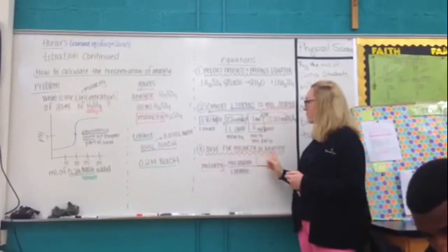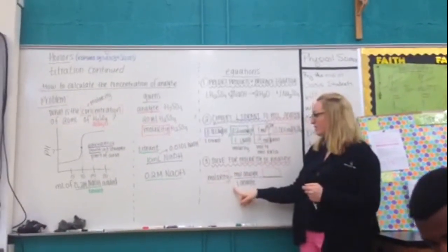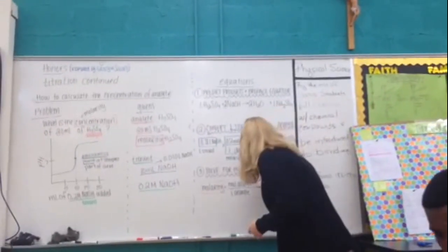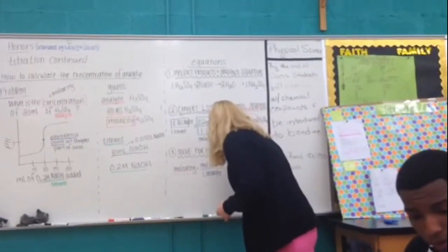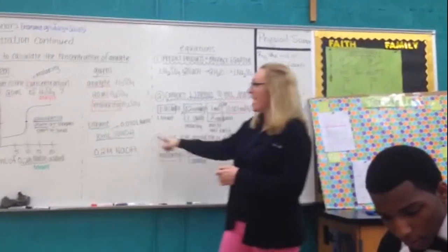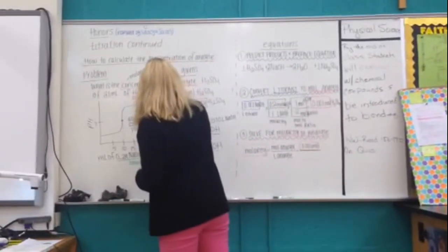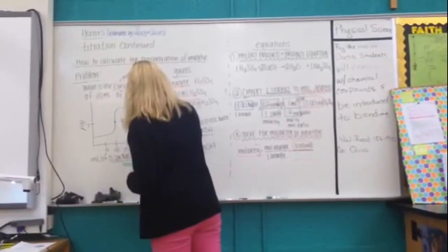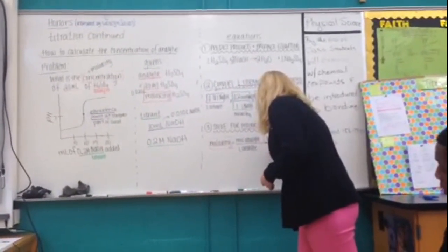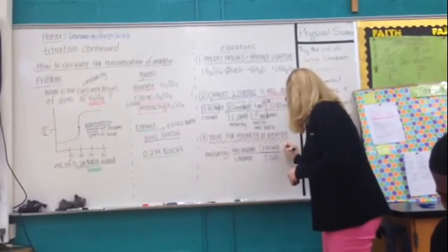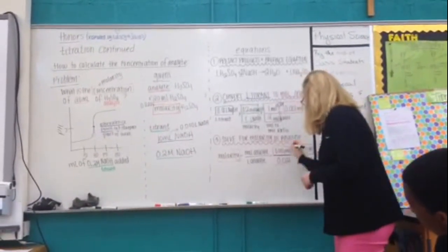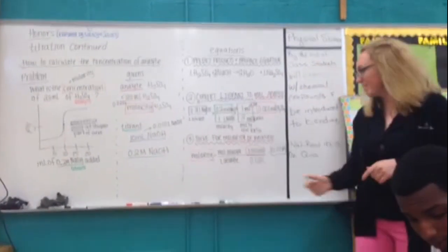If I want to solve for molarity, I know it's moles of NaOH over liters of NaOH. I take what I just calculated and I plug it in. Moles of NaOH over my liters of NaOH, which I had in the beginning. So I take that 20 milliliters divided by 1,000, which gives me 0.020 liters. And that should give me 0.05 molar. And I've successfully solved for the molarity of my analyte.